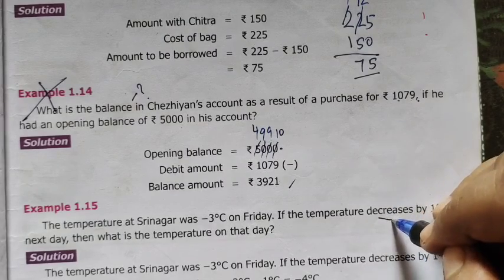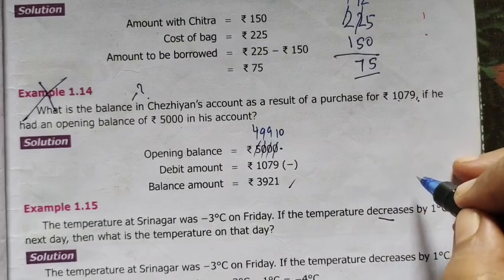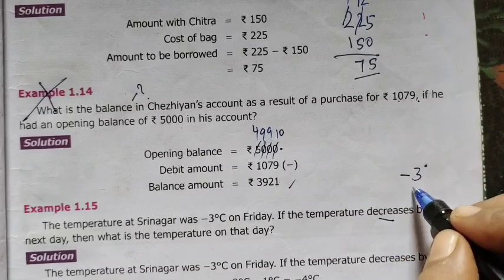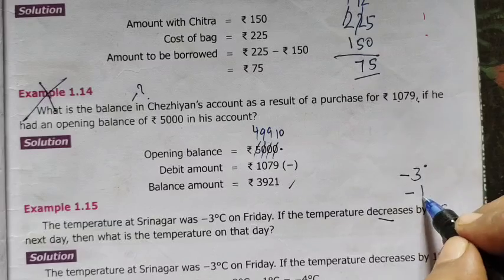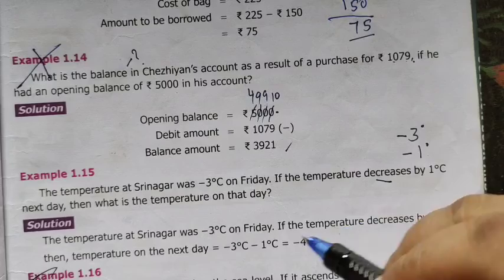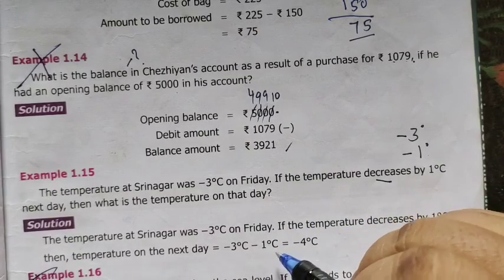If the temperature decreases by 1 degree. Decrease means reduced. Already minus 3. Again decreases means again minus 1 degree. Then, what is the temperature on that day?